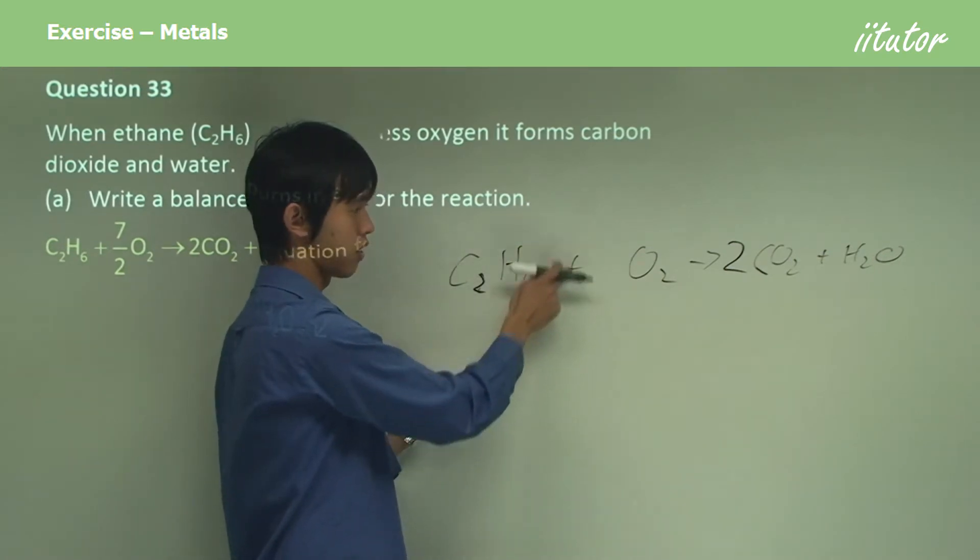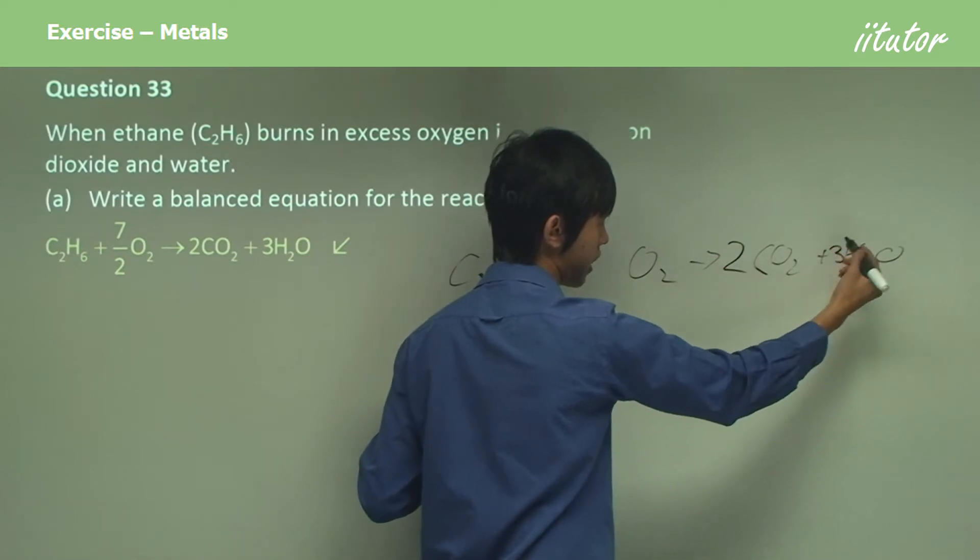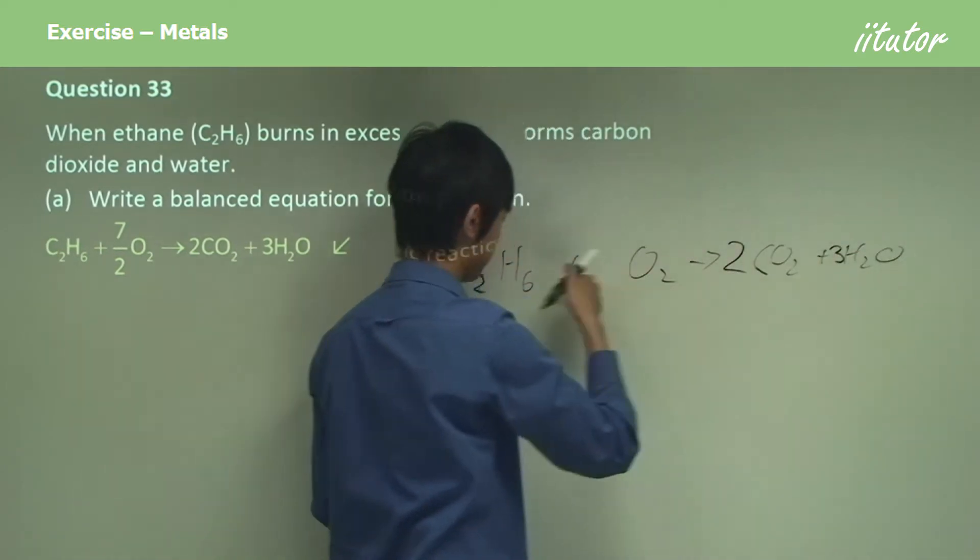Hydrogen. I've got six on this side, I've got two on this side, I multiply by three. I've got six on this side, six on this side.